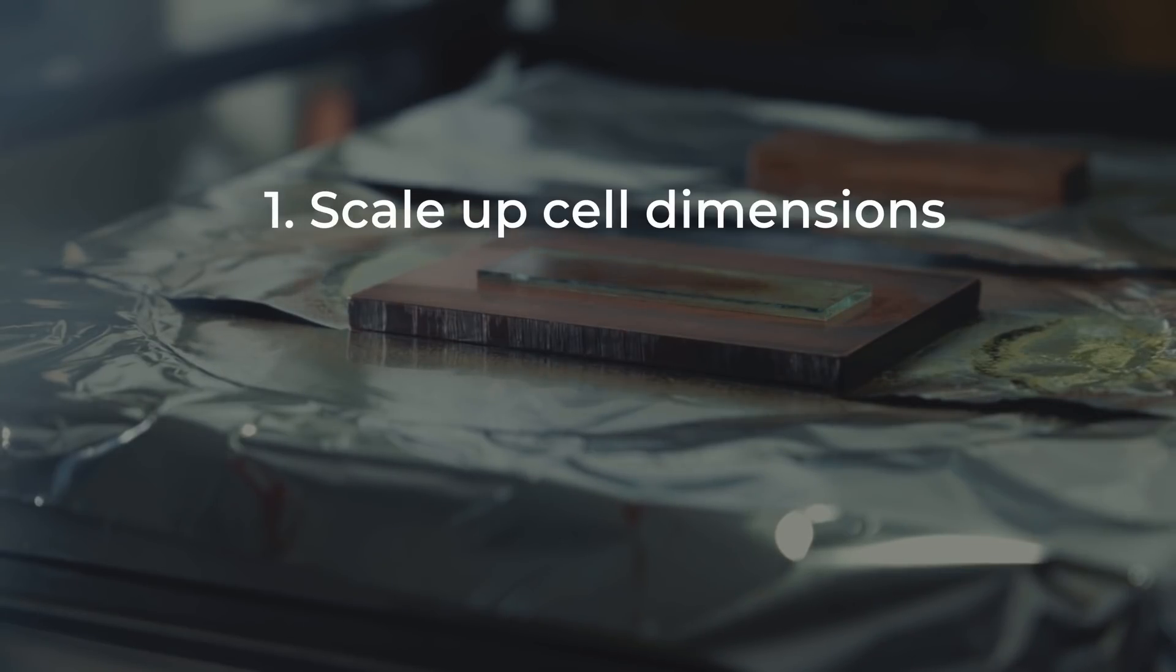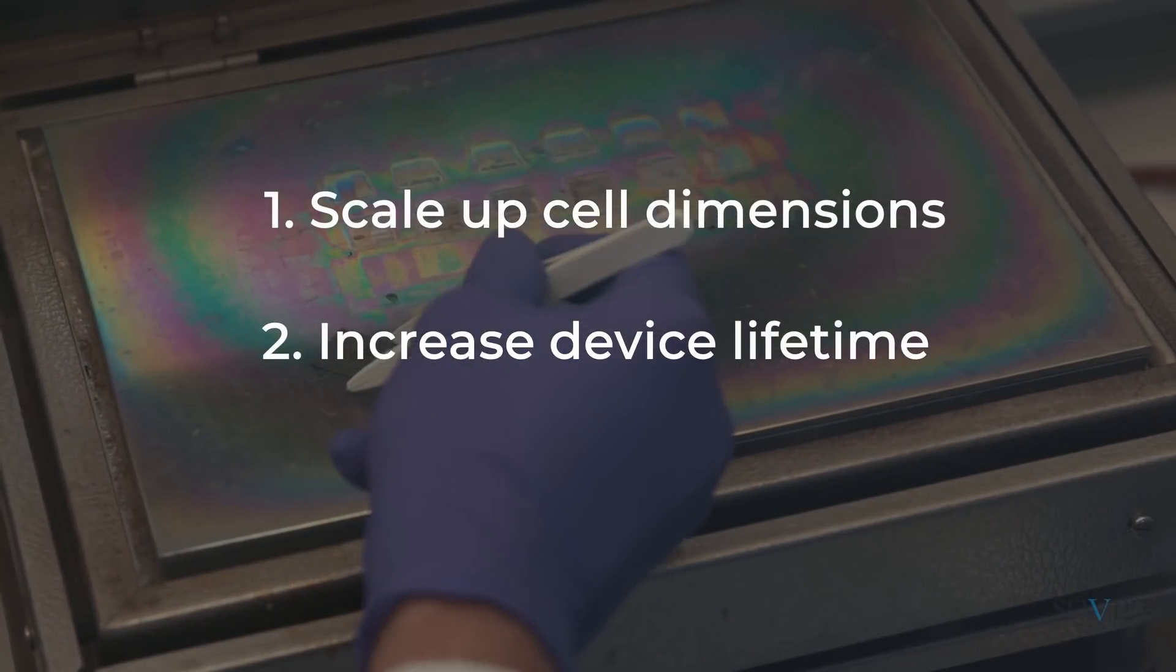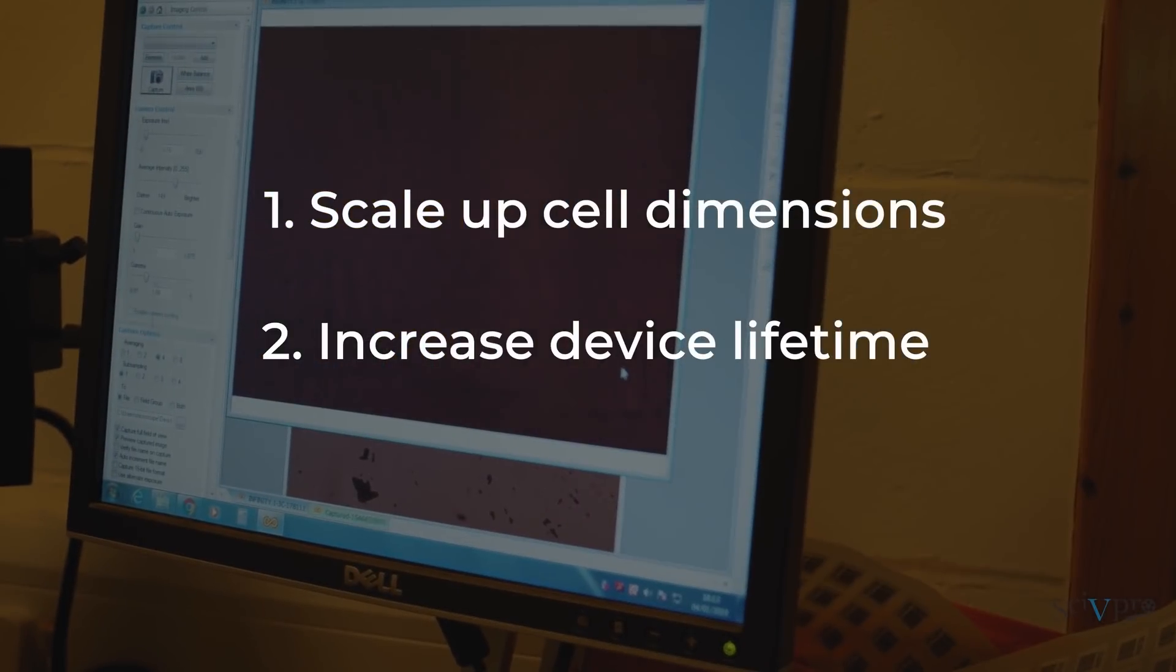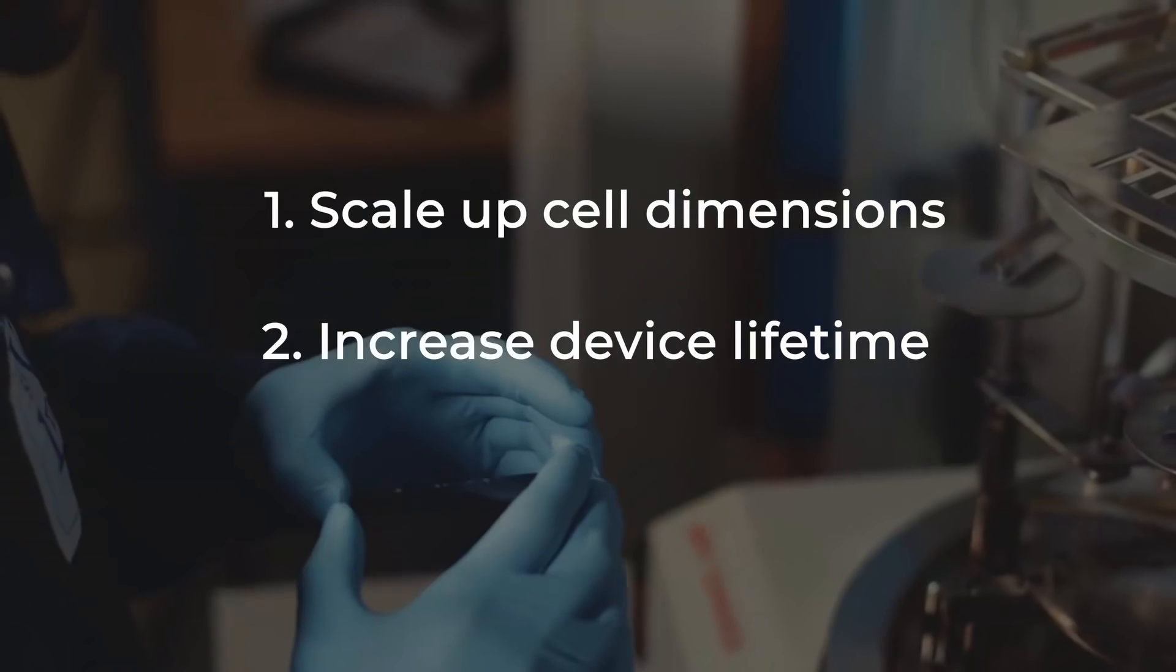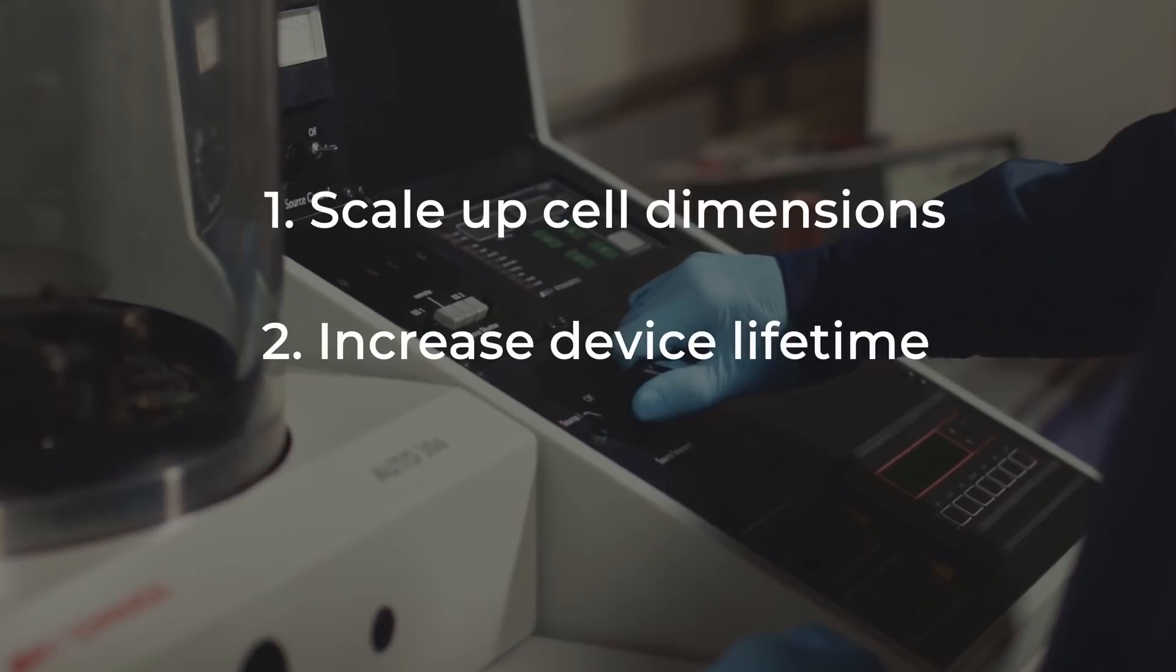The second main challenge is to be able to have these solar cells last for a long time. Silicon solar cells already last reliably on rooftops for around 30 years. Developing perovskites that can avoid being broken down by moisture, oxygen, and UV light is another significant task needed before perovskites will challenge silicon and ultimately fossil fuels.